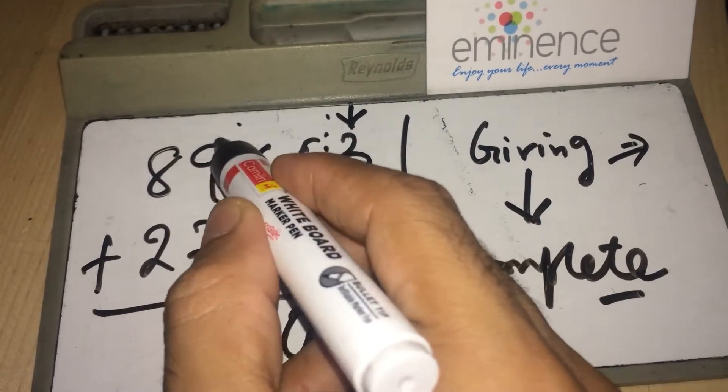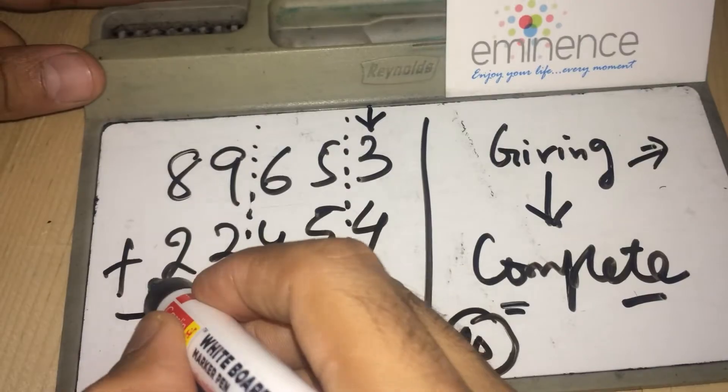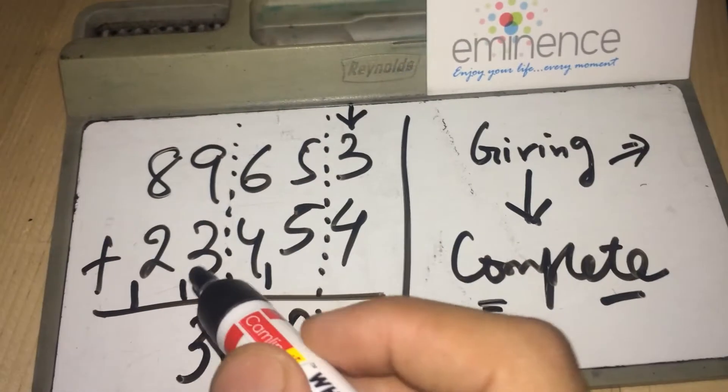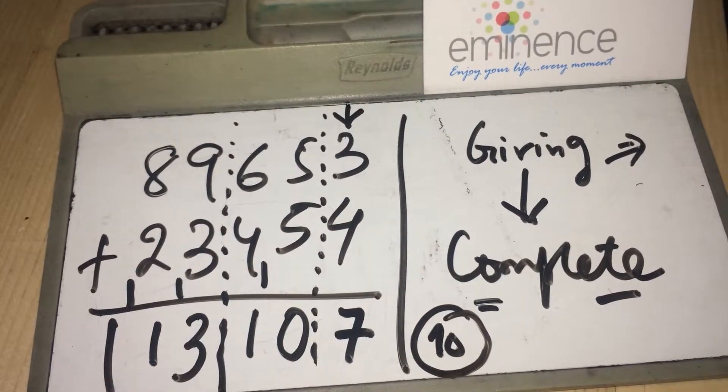Now, 9 needs 1. So this one gives, what remains is 3, gets 1. 8 needs 2 and what remains is 1 and 1. So this is the answer.